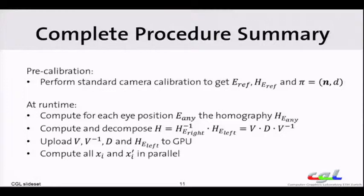Then at runtime, we get either from an eye tracker or if we decide to have a fixed view position, we just take this fixed view position. We get some eye position and we can use the free view transform to compute the corresponding homography. So in each frame we do this once for left eye, once for right eye. Then we have these two matrices, we multiply to get H. We decompose, upload those matrices to GPU and compute in parallel all barrier positions.